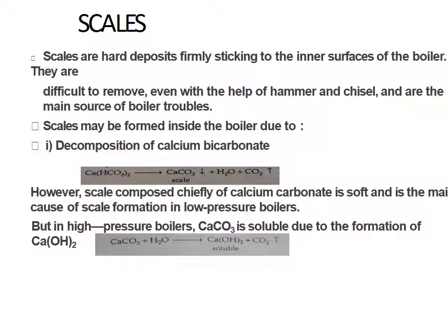Scales are hard deposits firmly sticking to the inner surface of the boiler. They are difficult to remove even with the help of a hammer and chisel, and are the main source of boiler trouble. Scales are harder in nature while sludge are looser in nature. The removal of sludge is easy using a wire brush, but removal of scale is a very difficult process even with a hammer. Causes of formation of scales follow.